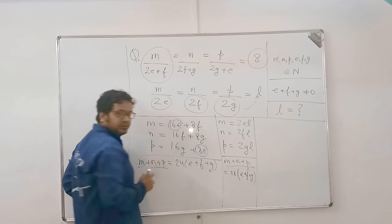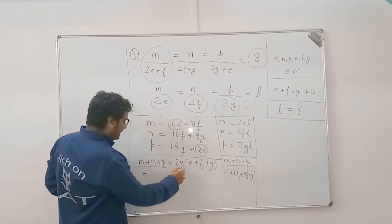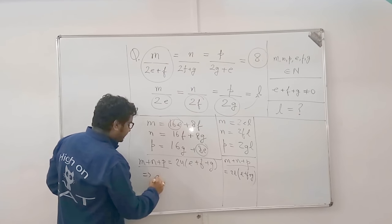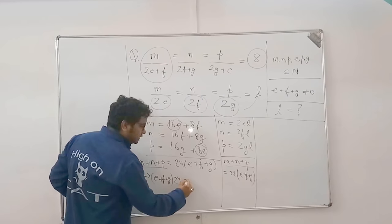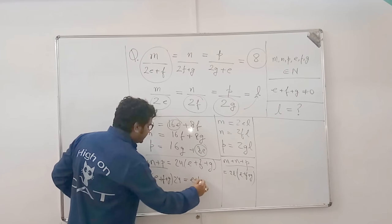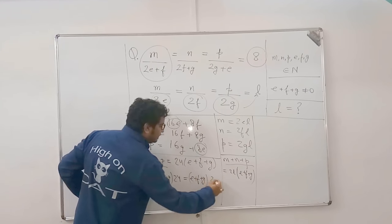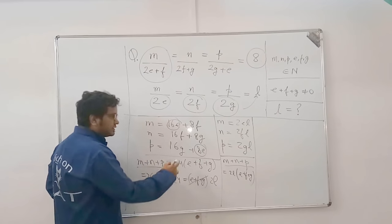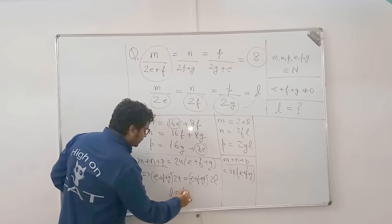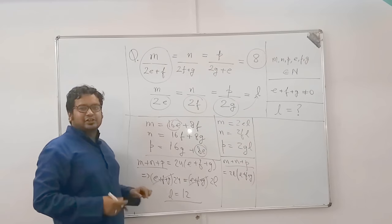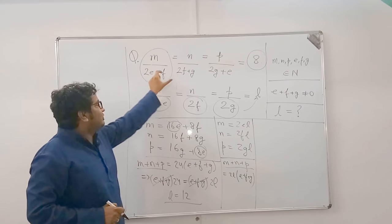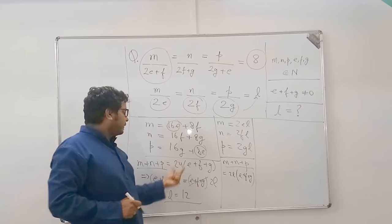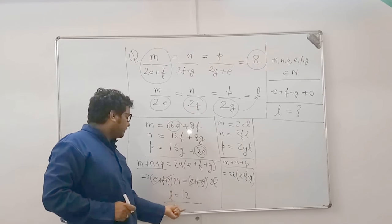Equate the right-hand side. e plus f plus g equals 24 is equal to e plus f plus g into 2l. These get cancelled because this is not equal to 0. l is equal to 12. Got the logic? By cross-multiplying, we could cancel e plus f plus g from two equations and get to the final answer.